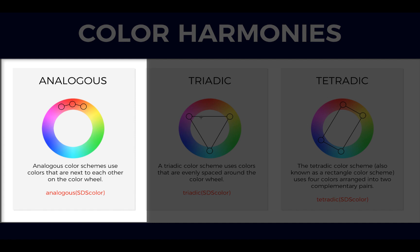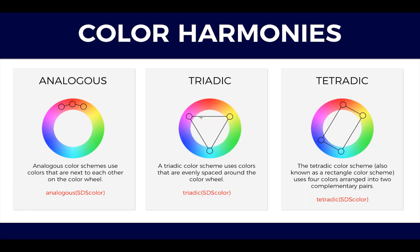Analogous scheme. Analogous color schemes use colors that are next to each other on the color wheel. They are often found in nature and are harmonious and pleasing to the eye. Make sure you have enough contrast when choosing an analogous color scheme — choosing one color to dominate, a second to support, and the third color is used along with black, white or gray as an accent.